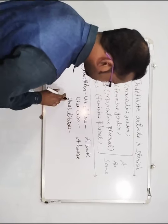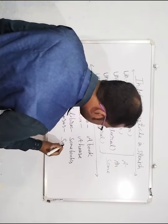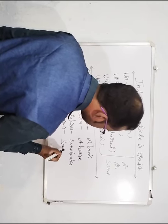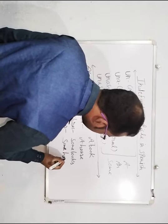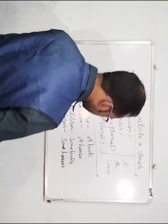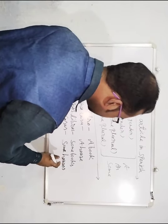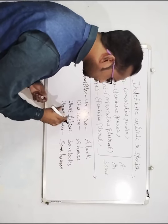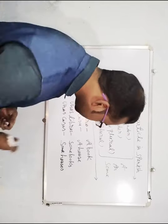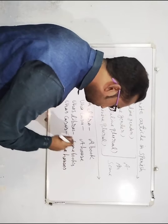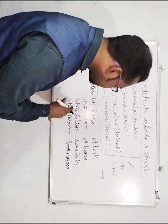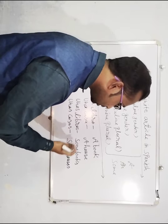Unas casas means 'some houses' in English. Some houses means in Spanish language 'unas casas'. Unas casas means some houses.